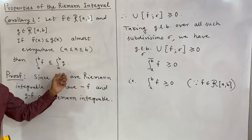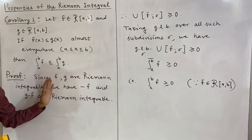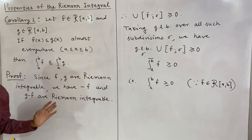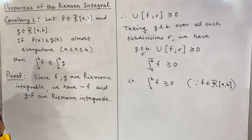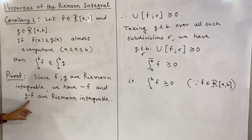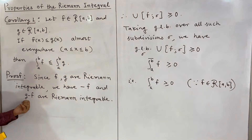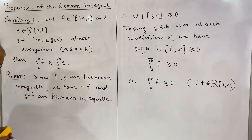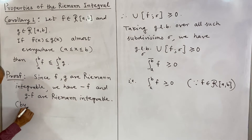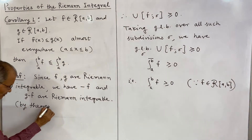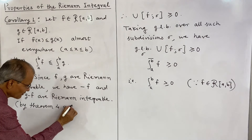Minus f is Riemann integrable by theorem 4: if f is Riemann integrable, then lambda·f is Riemann integrable, taking lambda = −1. The result g − f follows by theorem 5: if f and g are Riemann integrable, their sum is Riemann integrable. So g − f = g + (−f), and this follows by theorems 4 and 5.